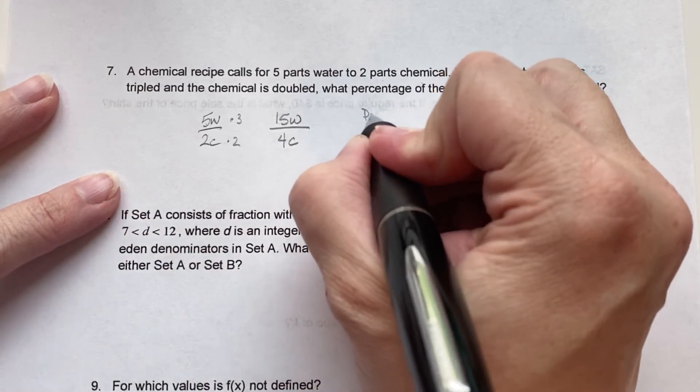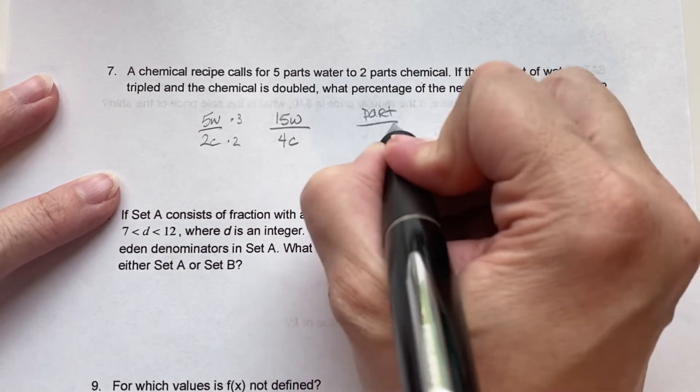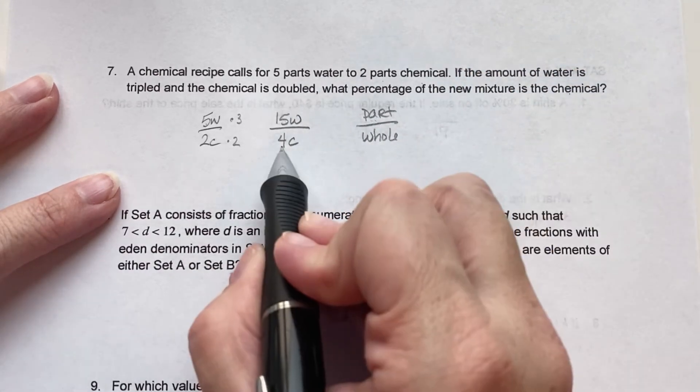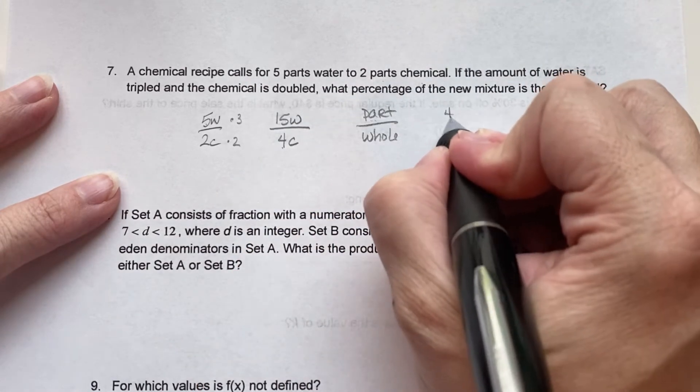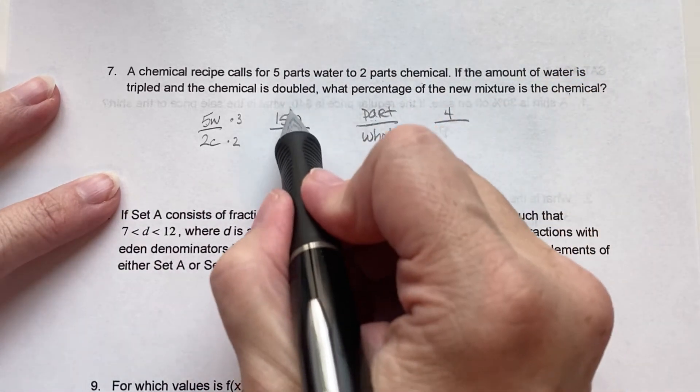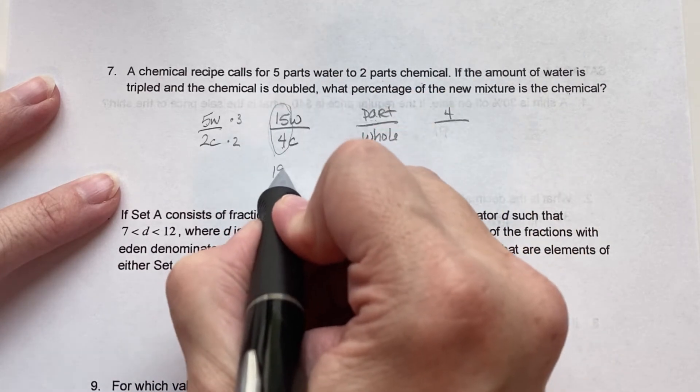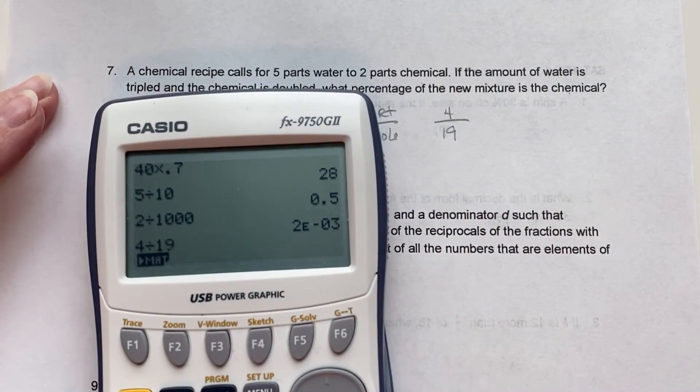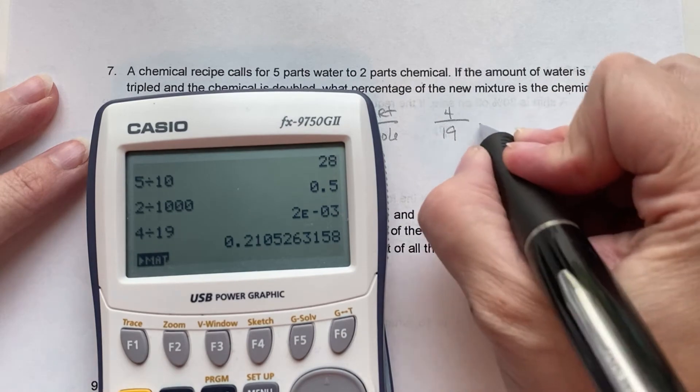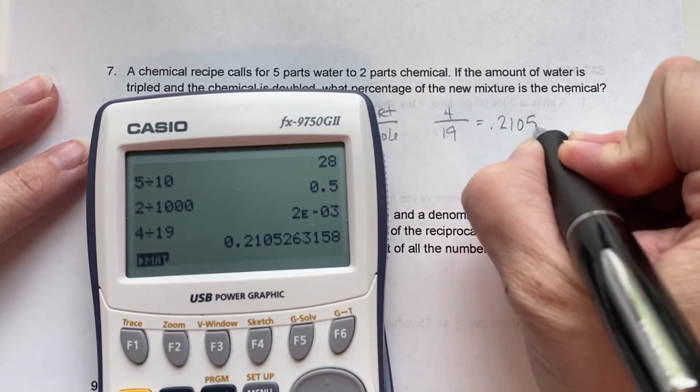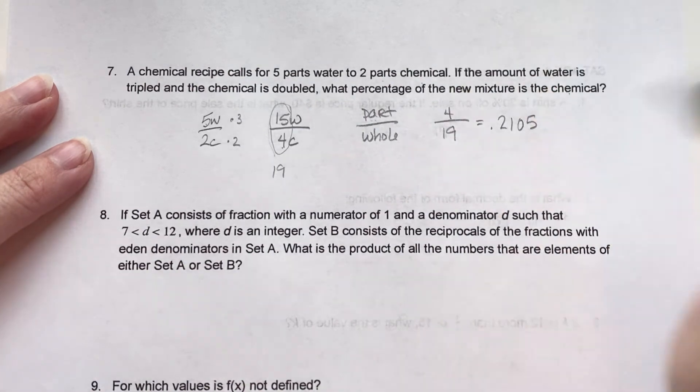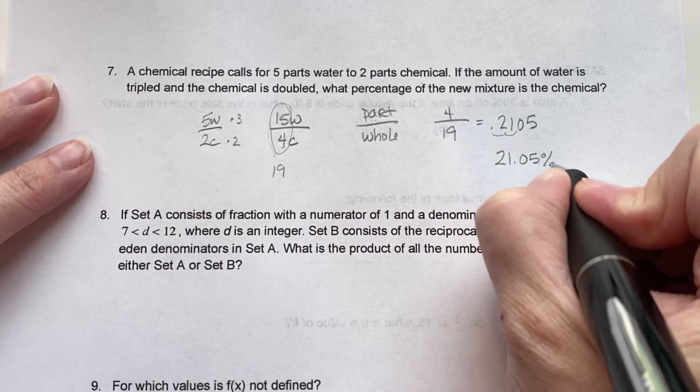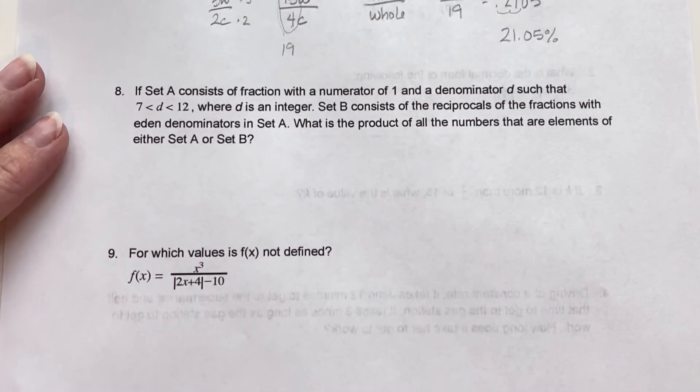So first we need the formula, which is going to be our part over our whole. So what part is the chemical? So we know that the chemical is 4 over the whole, which means the total of the mixture, which is going to be 19. So 4 over 19. Divide that out, 0.2105. Move the decimal over 2 times, so we have 21.05%.